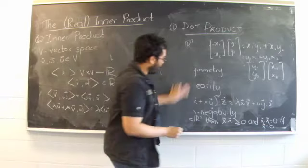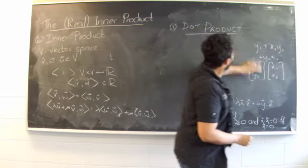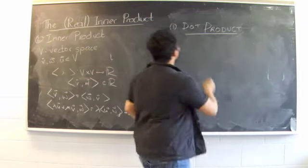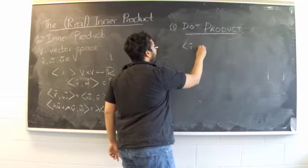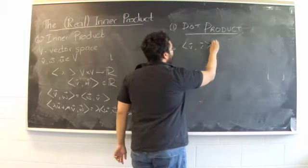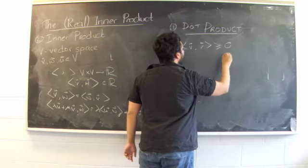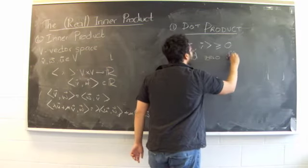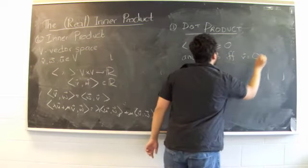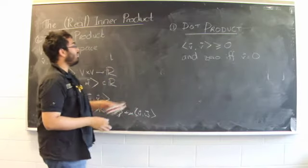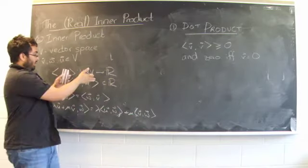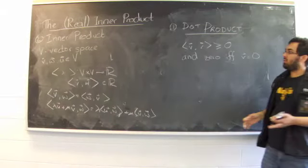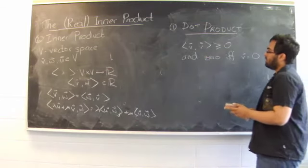And the last property of non-negativity, which I'll move into this board, simply states that if I take a vector v and take its inner product with itself, then we better get bigger than or equal to zero. And it will be zero if and only if the vector itself is zero. So these three properties and the way we define the function together define what an inner product is. And the vector space V with such an inner product is called an inner product space.